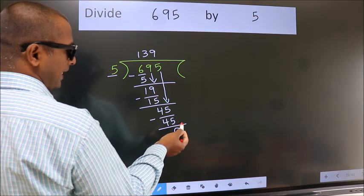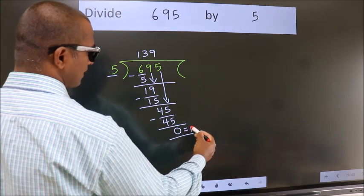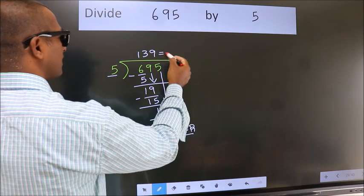No more numbers to bring down. So we stop here. This is our remainder. This is our quotient.